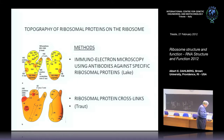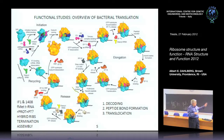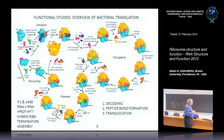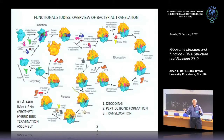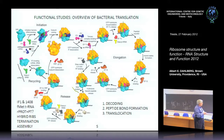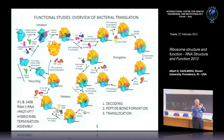We knew the process of translation before the crystal structure appeared. I'm going to address crystal structure data and how it relates to three processes: decoding, peptide bond formation, and translocation—all occurring during elongation. Once you have the message, a ribosome moving along, the tRNA coming in, you form the peptide bond and then translocate along the message. Those are the three steps we will address.